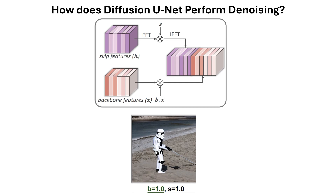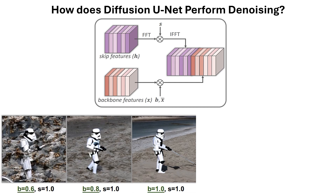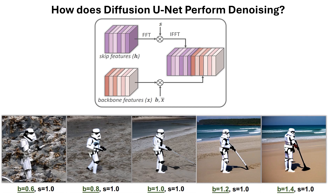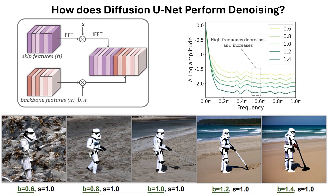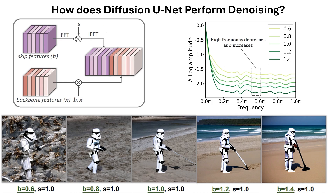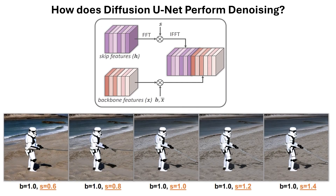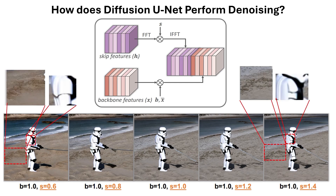To visually demonstrate this, they use a sample where b and s are both one — as if using the denoiser without any modification. As they decrease b to 0.6 and reduce the effect of primary backbone features, the output becomes noisier because more emphasis is placed on skip connection features containing high frequency details. Conversely, increasing b produces better quality results but at the cost of being too smooth, as it amplifies low frequency details. They also show that increasing b causes more attenuation in high frequency information, while changing s only modifies some tiny high frequency details like edges.